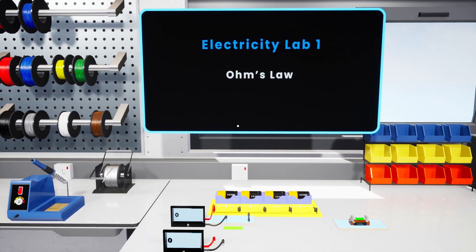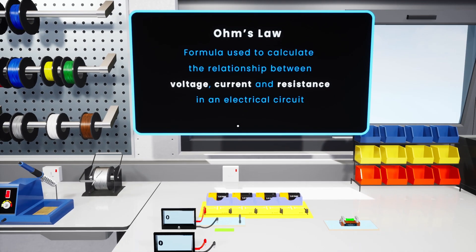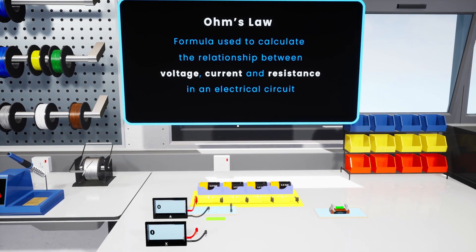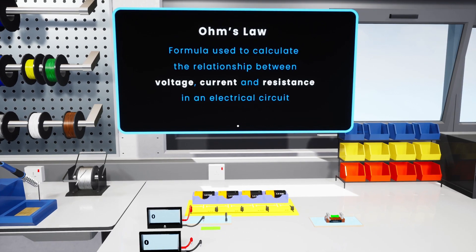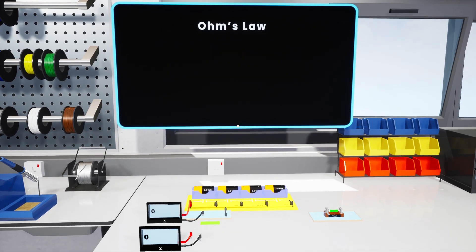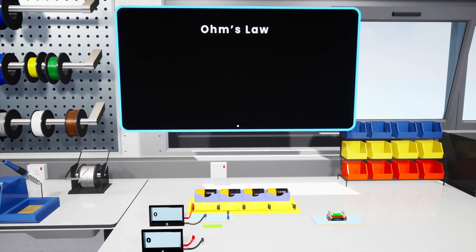So what is Ohm's Law? Ohm's Law is a formula used to calculate the relationship between voltage, current, and resistance in an electrical circuit. The equation is V equals I times R.